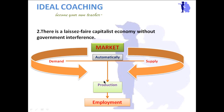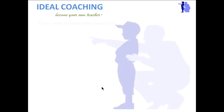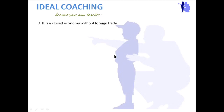The next assumption is: it is a closed economy without foreign trade. This means, like government interference, there should be no interference of foreign trade either. People should not be allowed to export or import, and no foreign agency should be allowed to enter the market. This is the assumption of the classical approach, and they argued that if it is fulfilled, their theory will work.